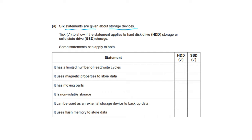Six statements are given about storage devices — tick to show if the statement applies to hard disk drive or solid state storage; some can apply to both. It has a limited number of read/write cycles — SSD. It uses magnetic properties to store data — HDD. It has moving parts — HDD; SSD has no moving parts. It is a non-volatile storage — both HDD and SSD. It can be used as an external storage device to back up data — both. It uses flash memory to store data — SSD.